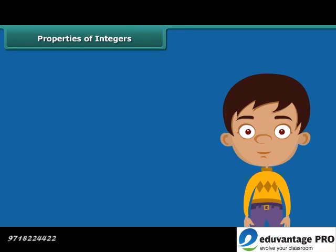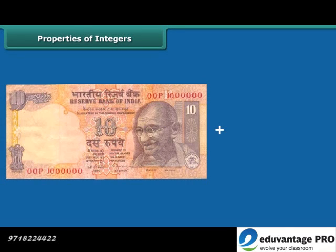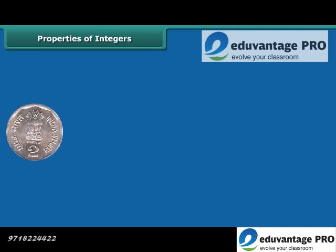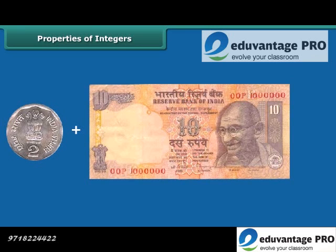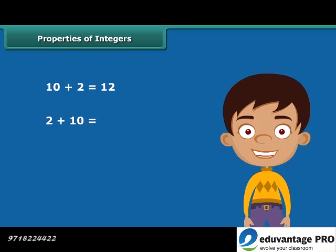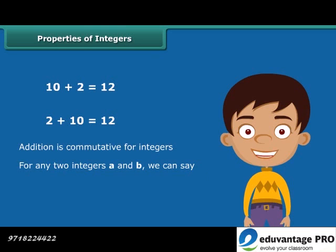Let us now move towards another property, that is commutative property. This is a 10 rupee note. If we add one coin of 2 rupees in it, we will get 12 rupees. Now take a coin of 2 rupees and add one note of 10 rupees in it. Again, we will get 12 rupees. We can write it as 10 plus 2 is equal to 12, and 2 plus 10 equals 12. In both the cases, we get the same answer. This means the integers can be added in any manner. Hence, addition is commutative for integers. In general, for any two integers A and B, we can say A plus B is equal to B plus A.